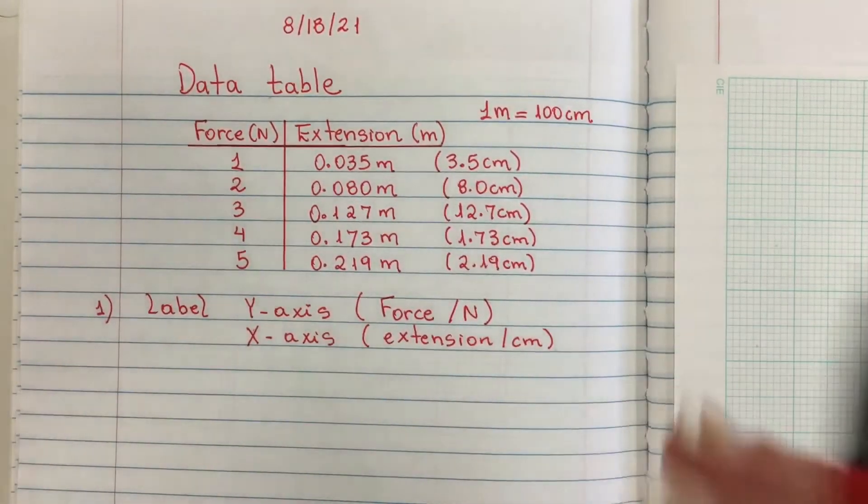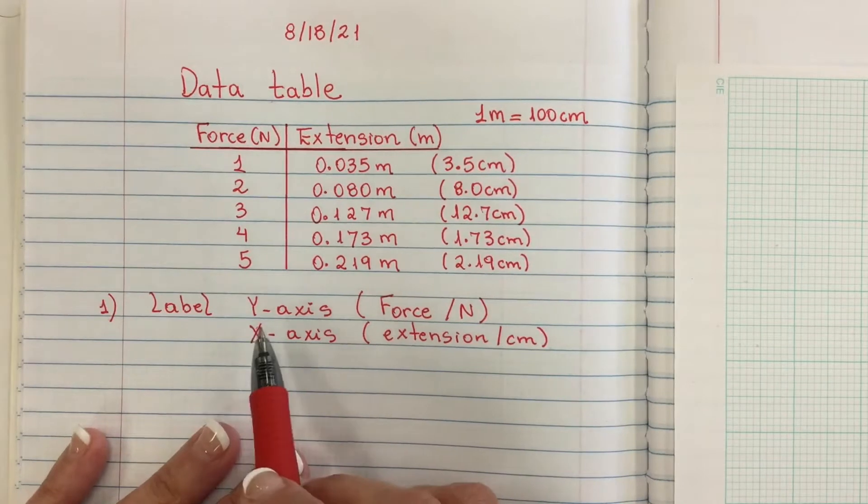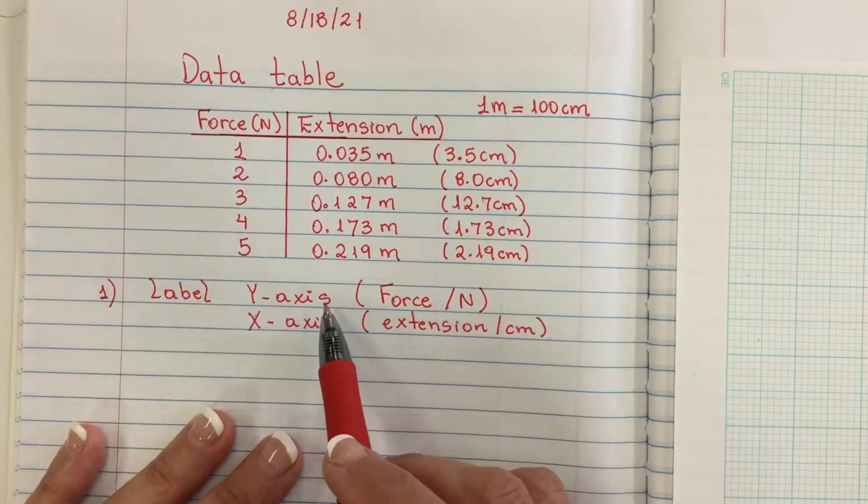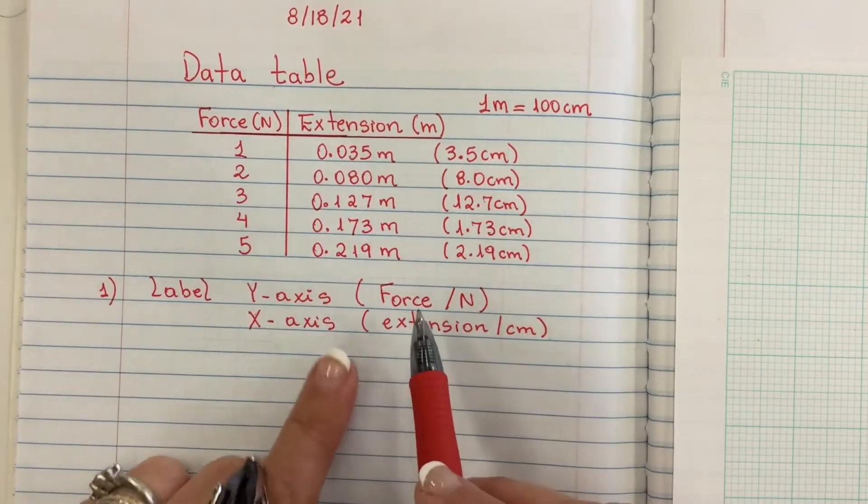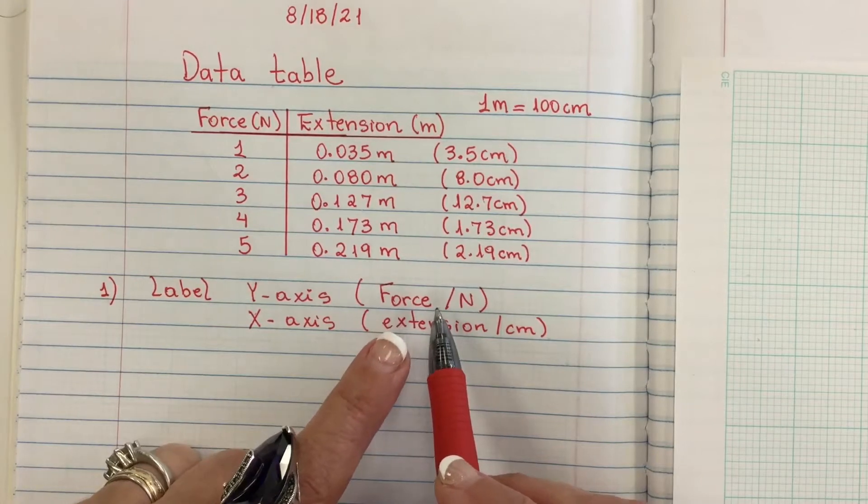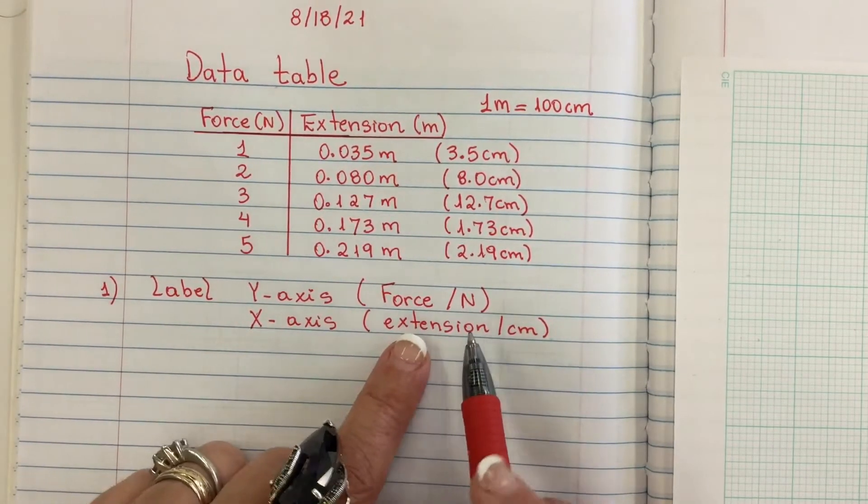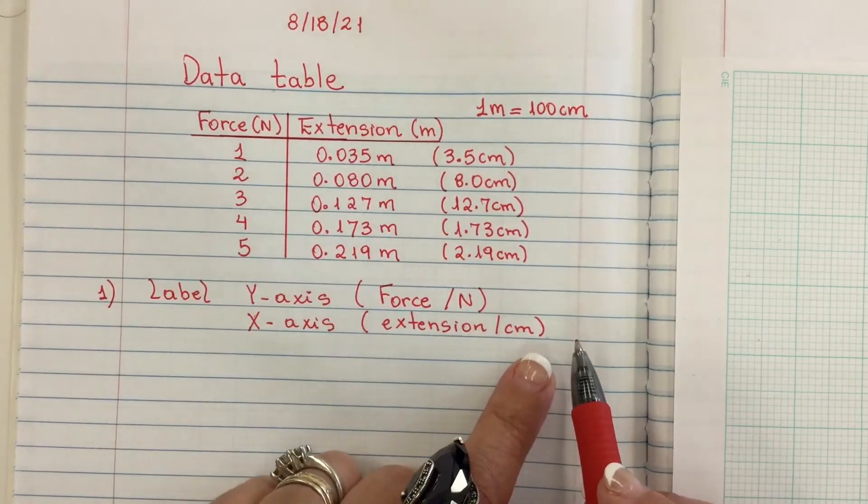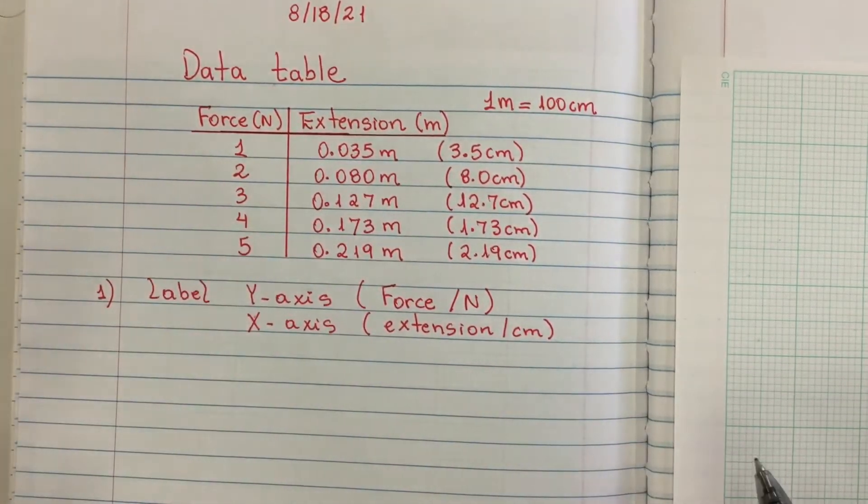However, for this case in particular, I'm going to draw on my y-axis that usually would have my dependent variable. In this case, I'm going to draw the force which is the independent variable, and on the x-axis my extension, which is the dependent variable. I'm going to flip the order in this case.